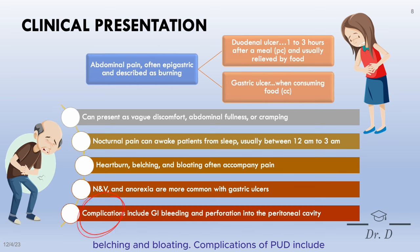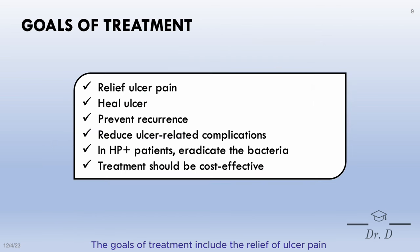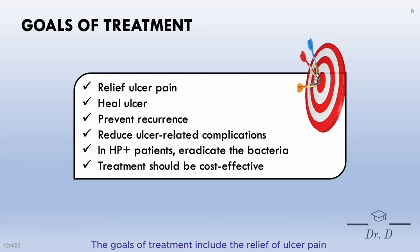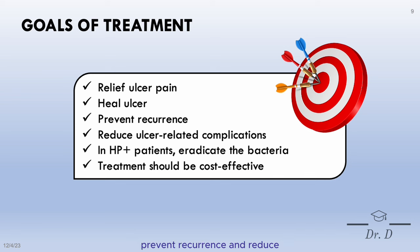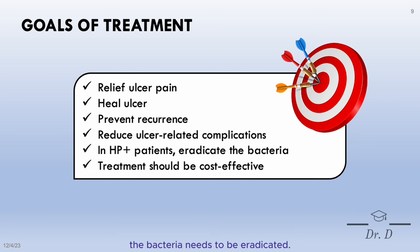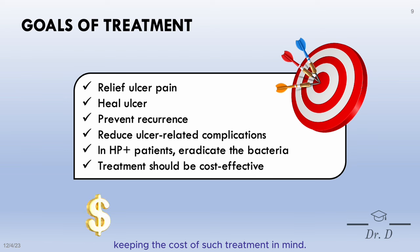Complications of peptic ulcer disease include GI bleeding and perforation into the peritoneal cavity. The goals of treatment include relief of ulcer pain and healing the ulcer. Furthermore, you need to prevent recurrence and reduce ulcer-related complications. In patients who test positive for H. pylori, the bacteria needs to be eradicated using the most appropriate treatment, keeping cost in mind.